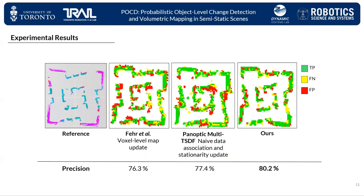We compare against two recent semi-static mapping methods: FAIRS, which performs voxel-level updates, and Panoptic Multi-TSDFs, which uses a simple heuristic to estimate the stationarity score. Our method outperforms these in precision on our warehouse dataset. The figures show the final map produced on a sample route. Our object-aware probabilistic method produces the least amount of false positives after a scene change, shown in red, while maintaining a high level of coverage, shown in green.